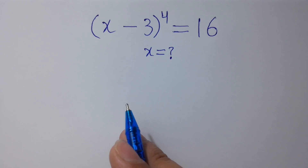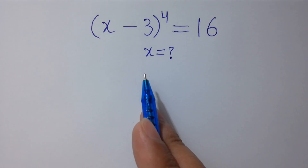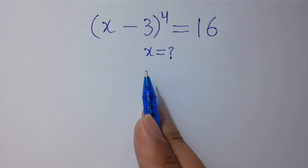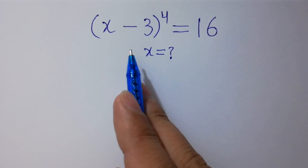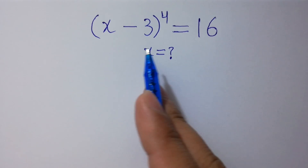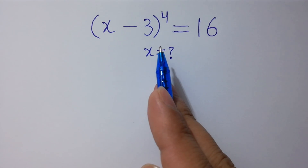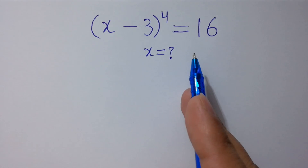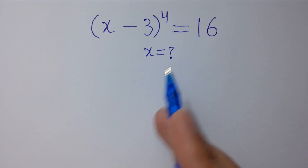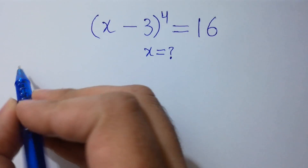Hello friends. Find the value of x if (x minus 3) to the whole power 4 equals 16. Let's have a solution.